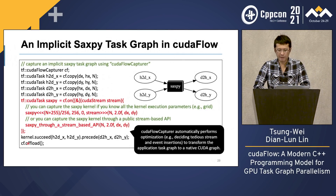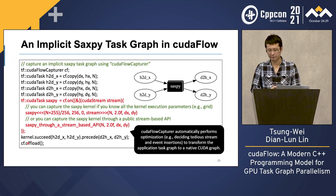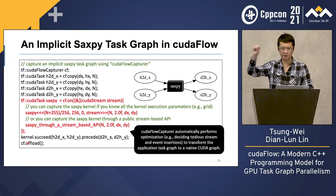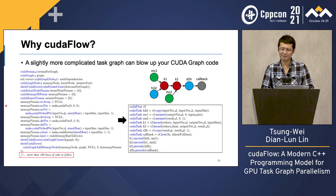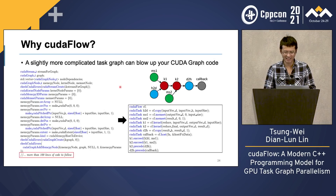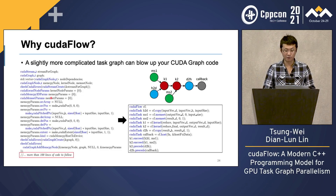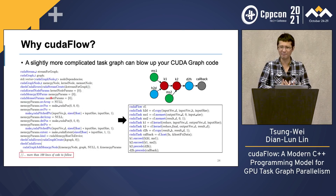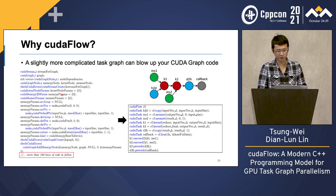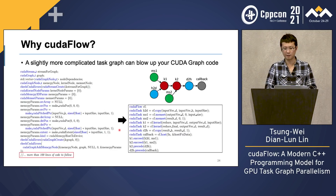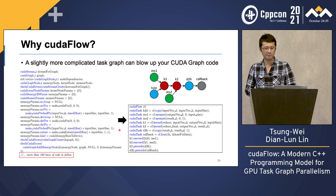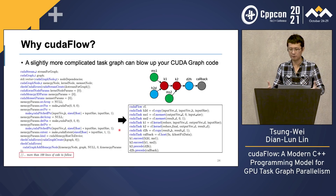CUDA Flow Capturer will automatically perform optimization such as deciding the stream and event assignment to transform the application task graph to a native CUDA graph. This interface is very expressive and requires little understanding about CUDA graph. For example, for a slightly more complicated task graph with only seven GPU tasks, the resulting CUDA graph code can have up to 100 lines of code, requiring you to specify all parameter details like cudaPitchedPtr, cudaGraphNodeCreate, cudaGraphNodeDestroy, cudaGraphAddKernelNode, and many more. The corresponding code with CUDA Flow has only 10 lines of code.